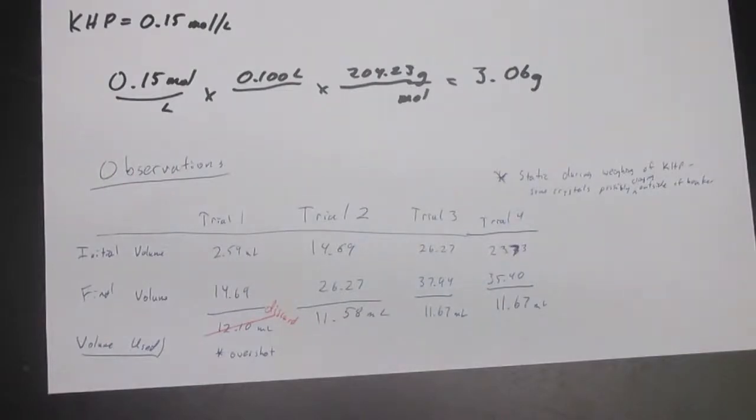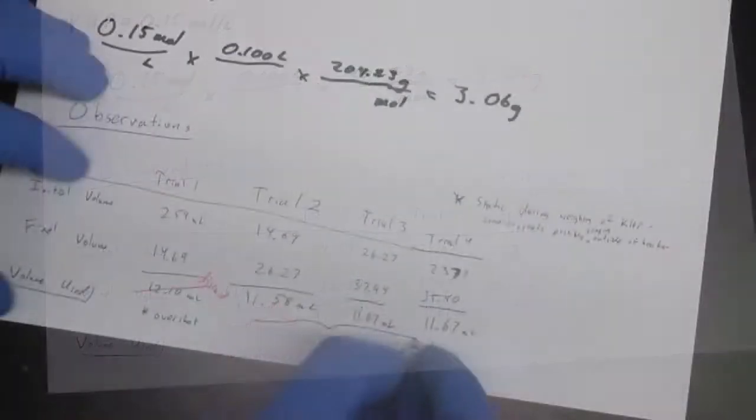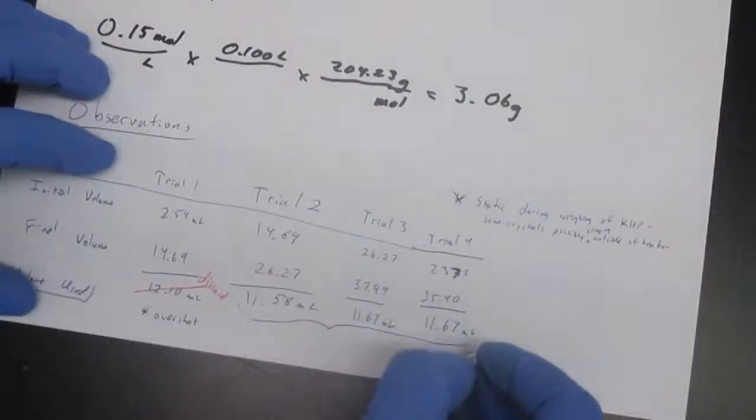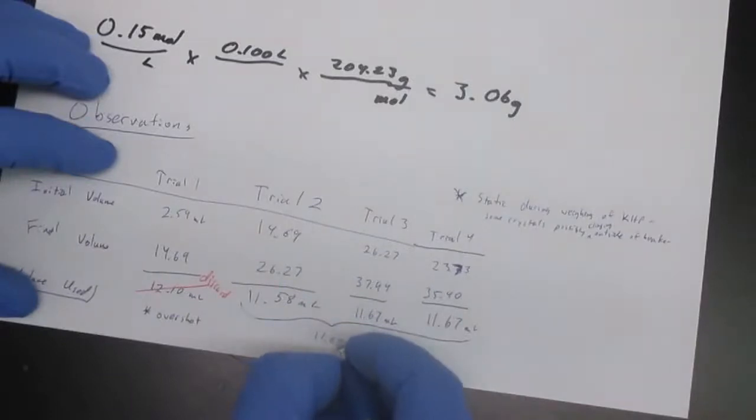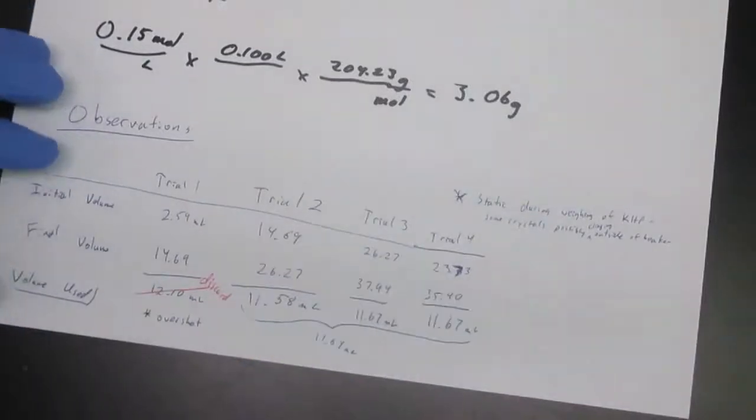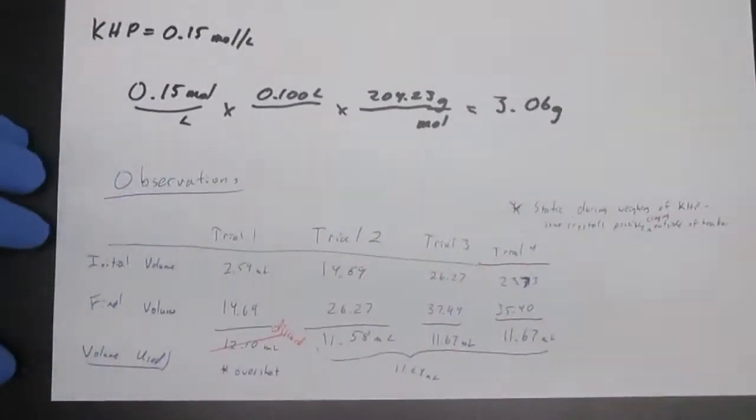I know students tend to focus on getting exactly that drop, but you've got to be precise all the way through, including pipetting your sample. If I take these three trials and average them—add them up and divide by three—the average is 11.64 milliliters. That's basically what we are using as the volume of potassium hydroxide.